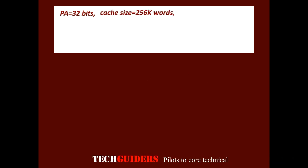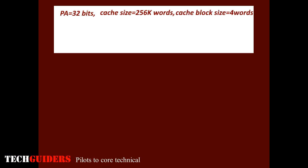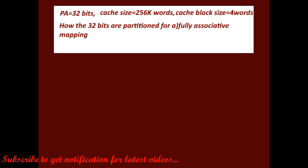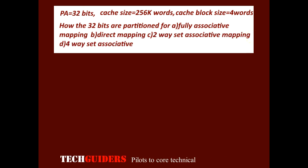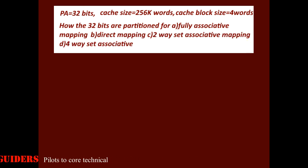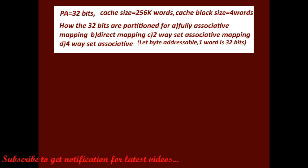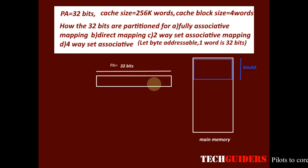Let the physical address be of 32 bits, cache size is 256K words, and the cache block size is 4 words. How are the 32 bits of the physical address partitioned for fully associative mapping, direct mapping, two-way set associative mapping, and four-way set associative mapping? Assume it to be byte addressable and each word is of 32 bits.